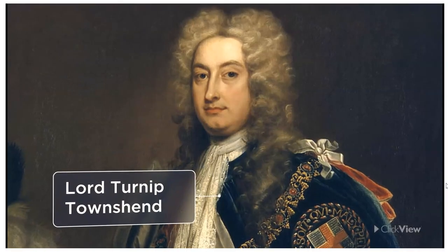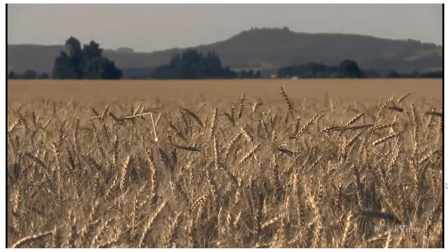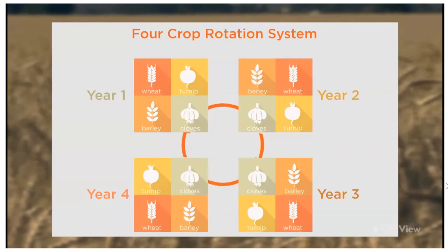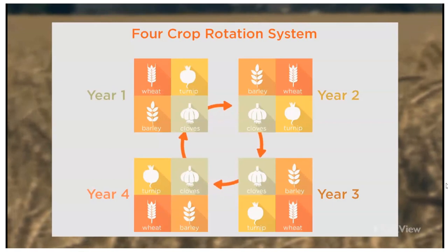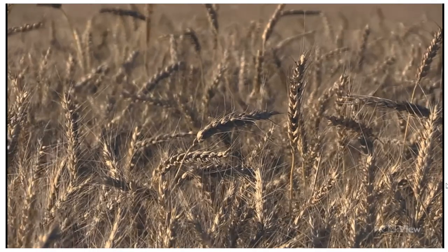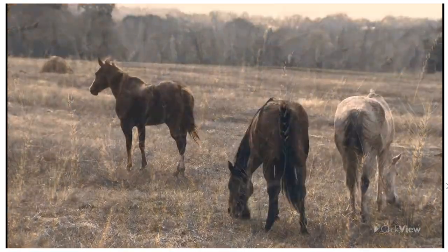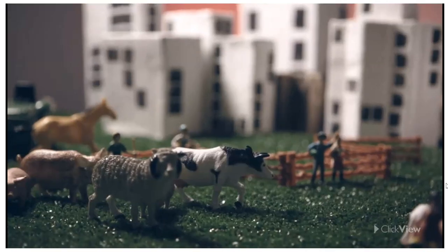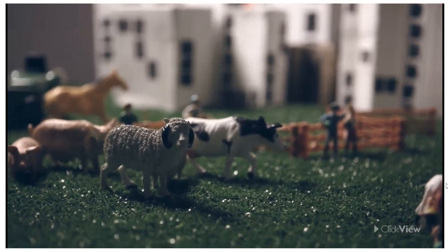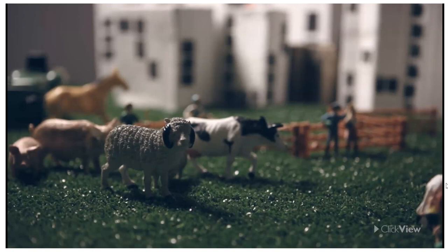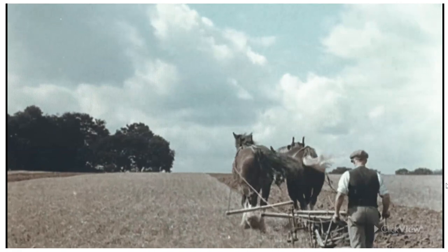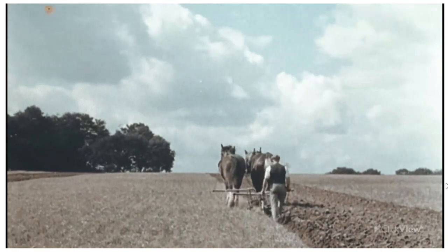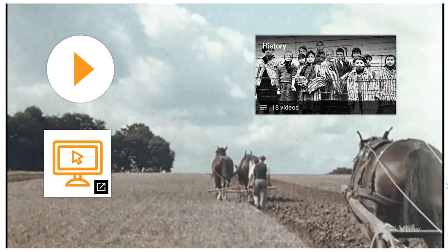During the 1730s, Lord Turnip Townsend introduced the Dutch four-crop rotation system to Britain. The system rotated wheat, turnips, barley, and clover through four fields — the turnips and clover nourished the soil with nutrients, producing a better wheat and barley crop the following year, and in winter months turnips were fed to livestock, meaning it was no longer necessary to slaughter beasts before winter. Improvements in farming had a dramatic social and economic impact: it now took fewer people to produce more food. By the end of the 18th century, farming had transformed from satisfying basic community needs into a commercial opportunity to sell food surplus to emerging local and foreign markets.